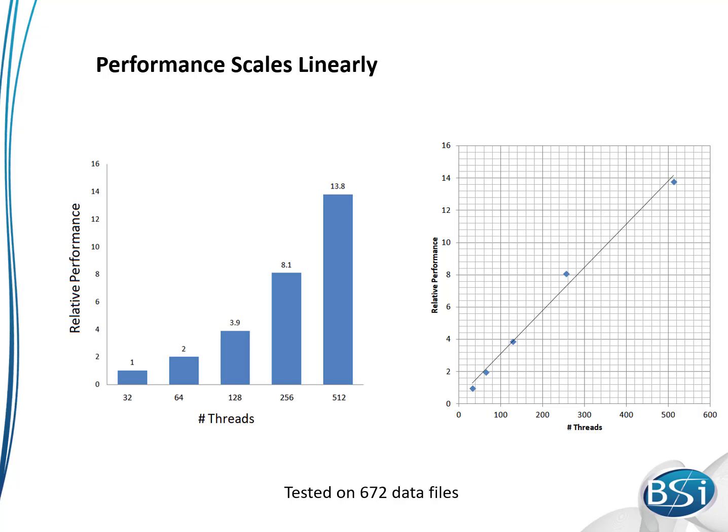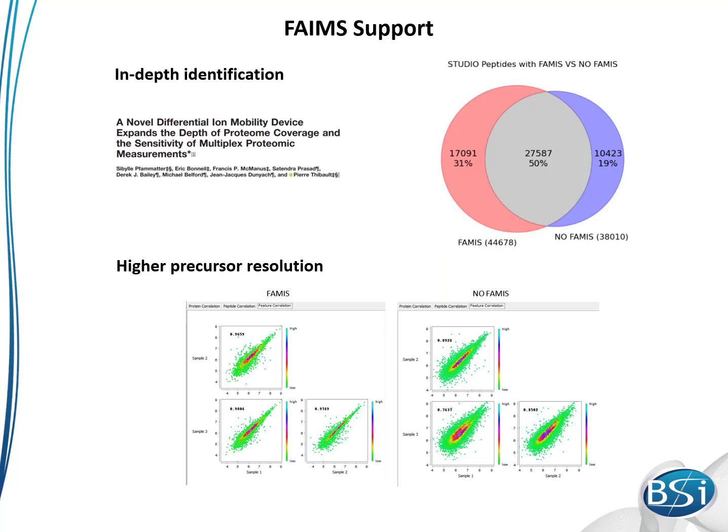The advances have been made in mass spectrometry technology as well. For example, their most famous interface offers the proteomics community the ability to enhance the separation of their Orbitrap samples based on compensation voltage. Peaks has incorporated this and now has the ability to read in data files with multiple CV values. This has been shown to improve the depth of coverage of proteomic samples.